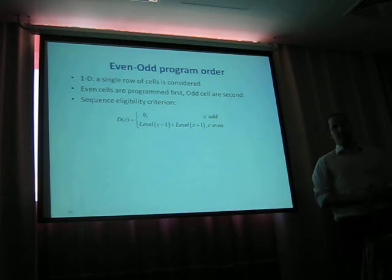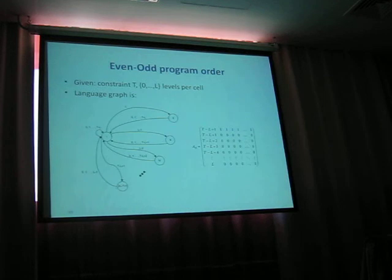There's no neighbor cells affecting them. But the even cells are being affected by the levels of both the right and the left cells. We've been able to construct also a generalized constrained language graph that limits this intercell interference phenomena. Note that the graphs presented so far are Shannon covers, and we have a proof in the paper.